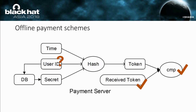Then the server checks if the token is already used — the token is designed for one-time use only, so if the token was already met by the server, it is regarded as invalidated. Then the server checks the generation time. A token has a relatively short period of lifetime, usually some minutes or half an hour, so if the token was generated long ago, it cannot be used to do a transaction.